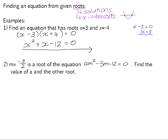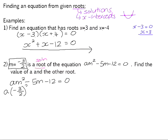Number 2: m equals negative 3 over 2 is a root. Remember, a root is a solution of the equation am squared minus 5m minus 12 equals 0. Find the value of a and the other root. We know that one of the answers to the equation is negative 3 over 2. So if we've got am squared minus 5m minus 12 equals 0, we can substitute negative 3 over 2 in place of m.